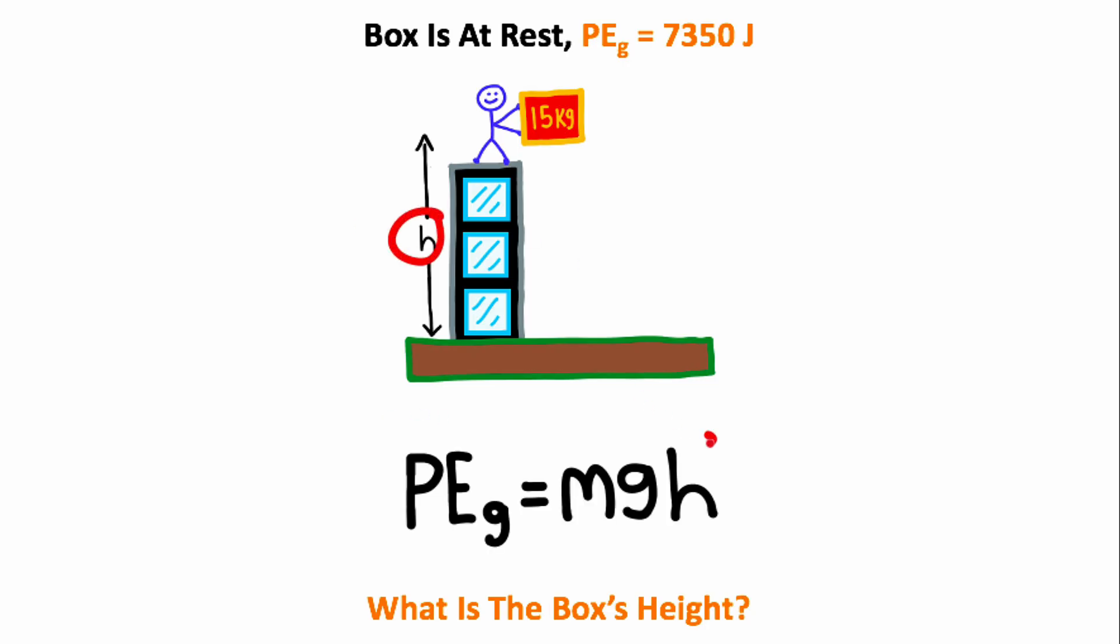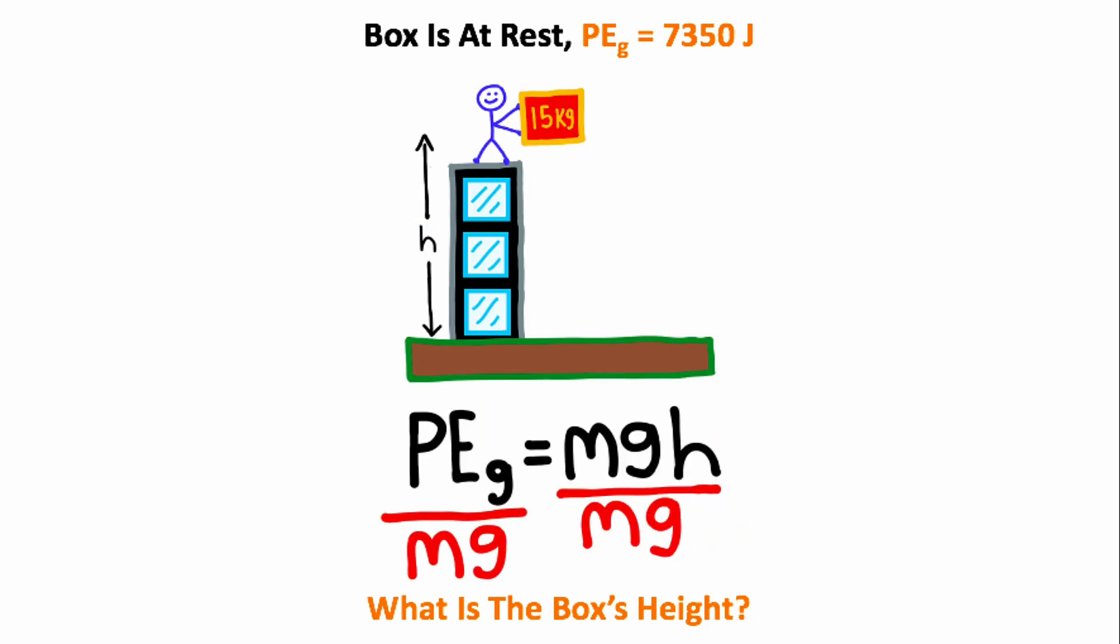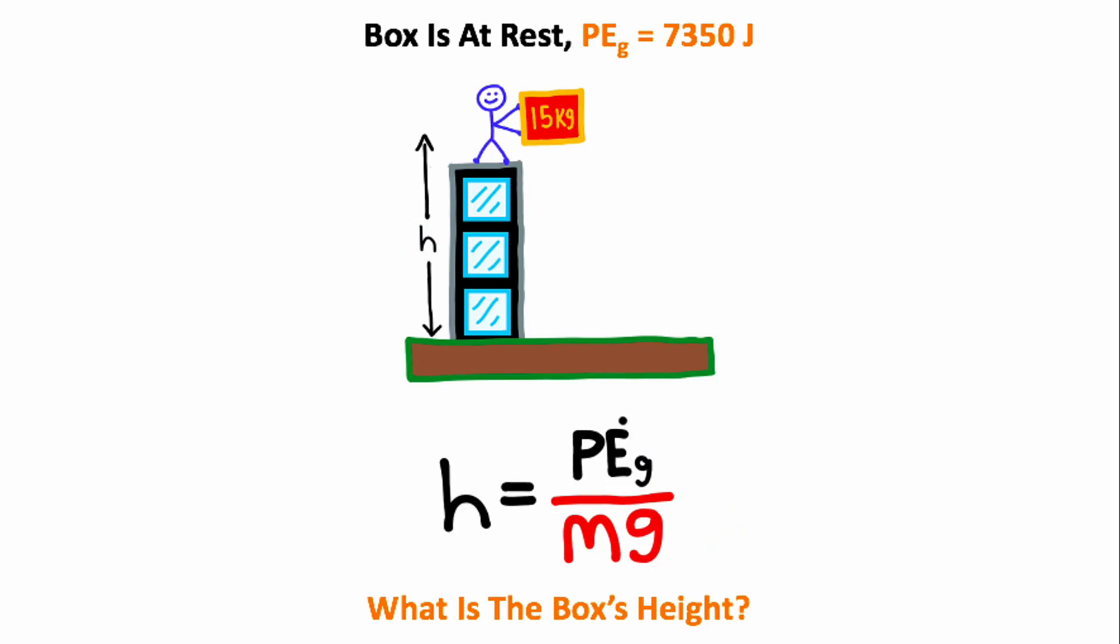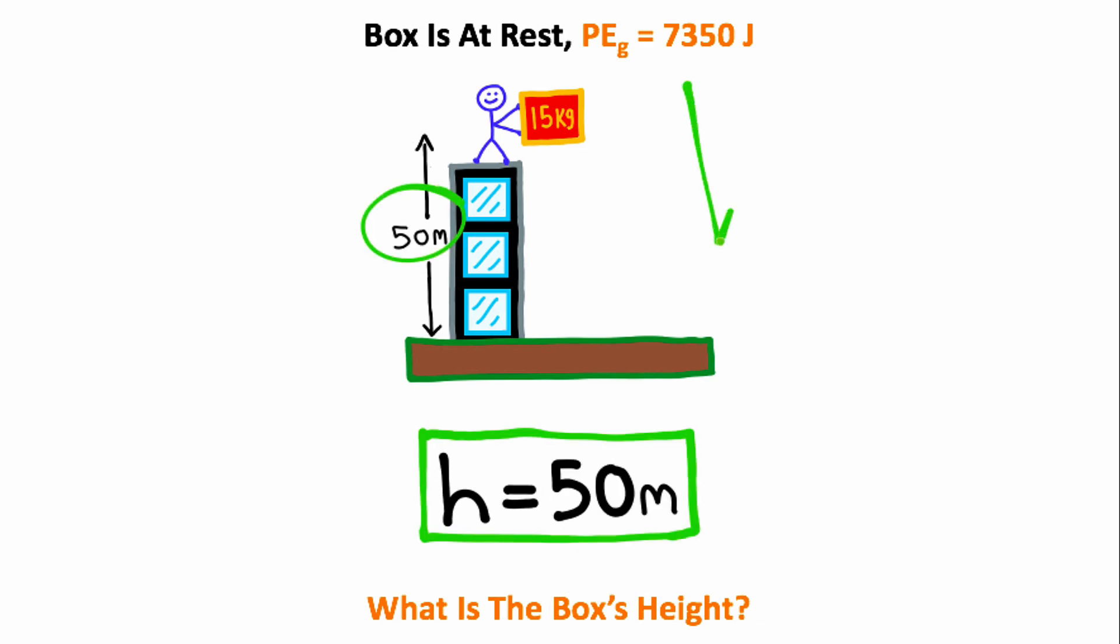Since I'm trying to calculate the height, which is h, I'm going to move mg to the other side of this equation. So we have the potential energy, which is 7350 joules. The mass of the box is 15 kilograms, and assuming that we're on Earth, the gravity constant is 9.8 meters per second squared. All you need to do from here is type this fraction into a calculator, and you should get that the height is 50 meters. So the box is 50 meters above the ground.